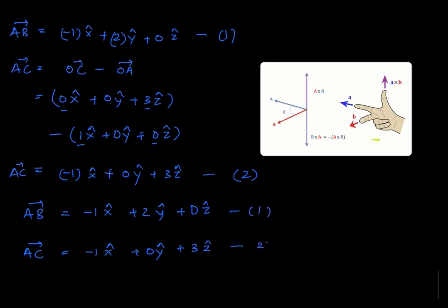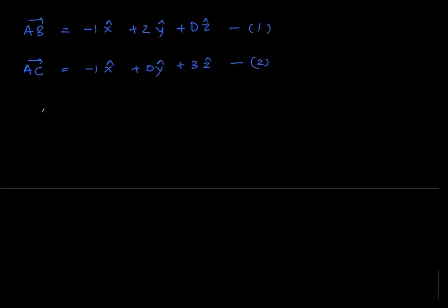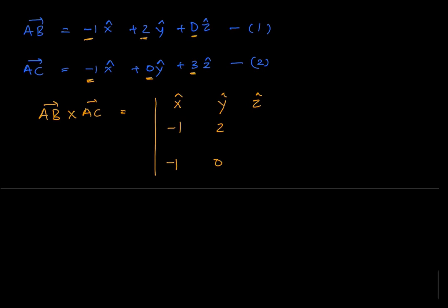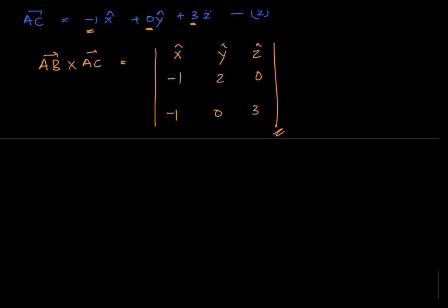We had marked these as vectors 1 and 2. All we need to do now is find the cross product. We know that AB cross AC is found by writing unit vectors x, y, z as the first row of a matrix, then writing the x, y, and z components of AB and AC in the subsequent rows. Once we write this down, we find the determinant of this matrix to obtain the cross product.